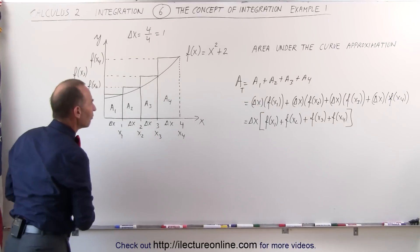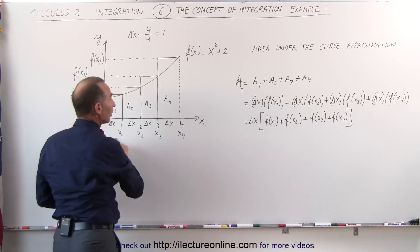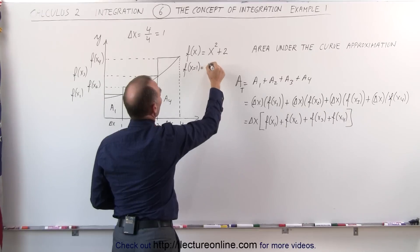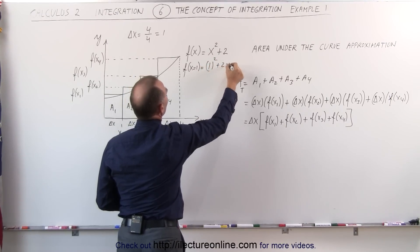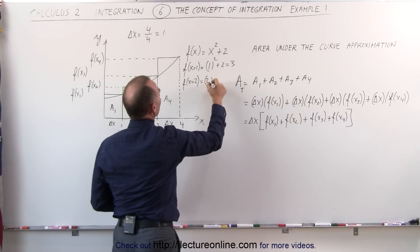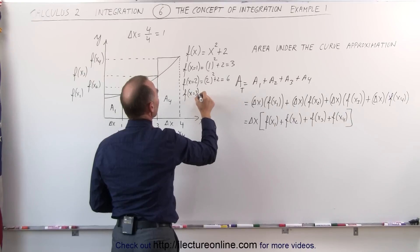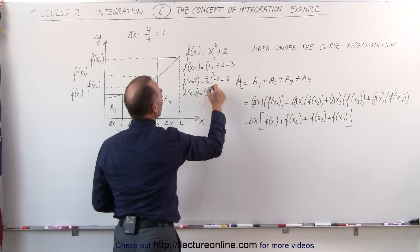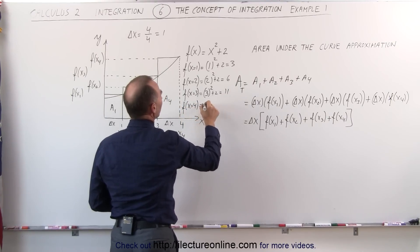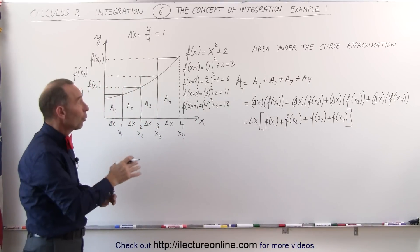What are the heights? f(x1) is the function evaluated at x1 = 1, so f(1) = 1² + 2 = 3. The function evaluated at x = 2 is 2² + 2 = 6. The function evaluated at x = 3 is 3² + 2 = 11. Finally, the function evaluated at x = 4 is 4² + 2 = 18. Those are the heights of the four rectangles.